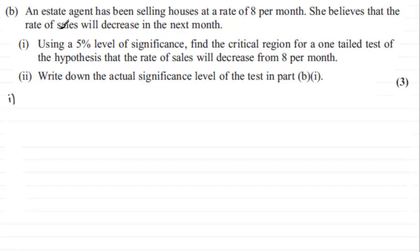find the critical region for a one-tailed test of the hypothesis that the rate of sales will decrease from 8 per month. And then part two we've got to then go on to find the actual significance of the test. Well, let's just start then with part one here. First of all, we've got to think about what kind of distribution this is. Well, we've got a discrete random variable because the estate agent is selling houses, so we will be looking at the number of houses that the estate agent sells. And because they occur at a mean rate of 8 per month, this tells us that it's going to follow a Poisson distribution with a mean of 8.